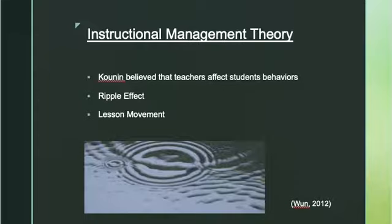Kounin is also the founder of the ripple effect. This occurs when the teacher corrects a misbehavior in one student, which positively influences the behavior of the other students. The effect is greater when the teacher clearly names the unacceptable behavior and gives a reason to the students. For example, if somebody was running in the classroom, the teacher would state to student A that there is no running in the classroom, instructing the student not to run and telling other students that it will not be allowed.